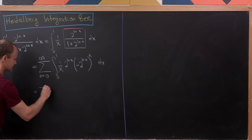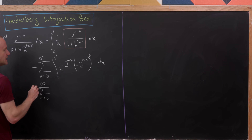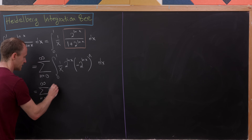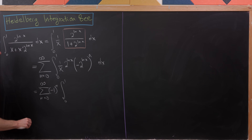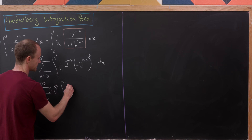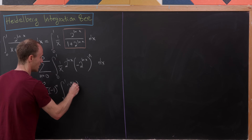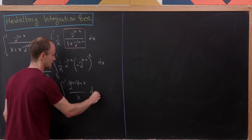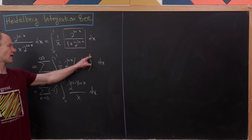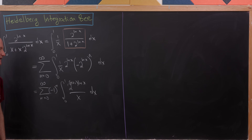I'm going to rewrite this as the sum as n goes from 0 up to infinity of minus 1 to the n, and then we'll have the integral from 0 to 1 of 2 to the n plus 1 times natural log of x over x, dx. That's from taking this n and bringing it into the parentheses, then combining the two factors with a base of 2.